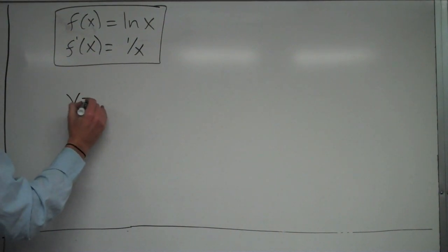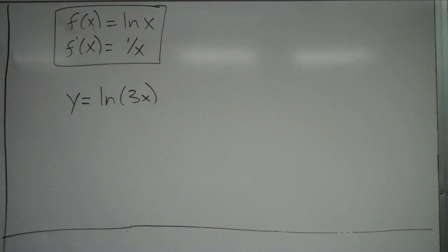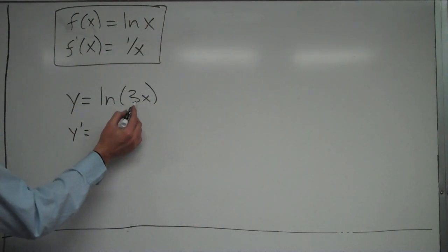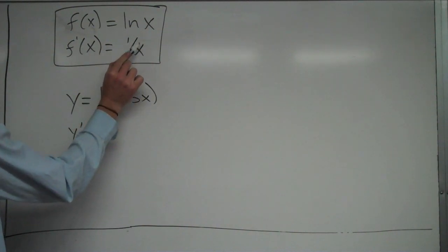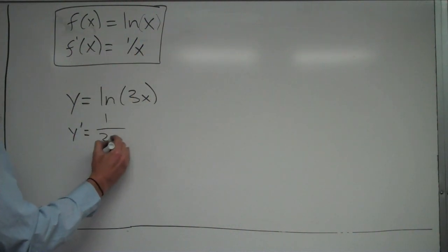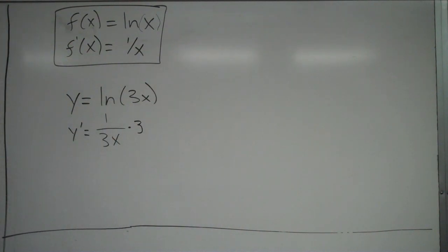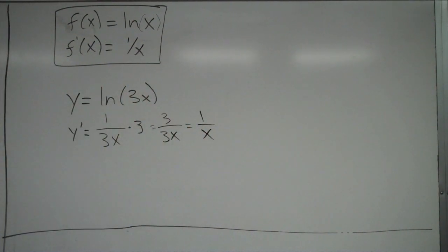It might not just be y equals natural log of x. Maybe you have y equals natural log of 3x. To find the derivative of that, you'd use the chain rule along with the basic rule. The first step is 1 over what's inside, so it's 1 over 3x. Then apply the chain rule: times the derivative of what's inside, which is times 3. That simplifies to 3 over 3x, and those 3s cancel, giving 1 over x. So the derivative of natural log of 3x is the same as that of natural log of x.